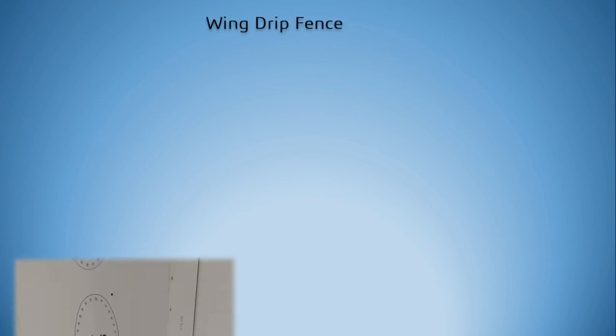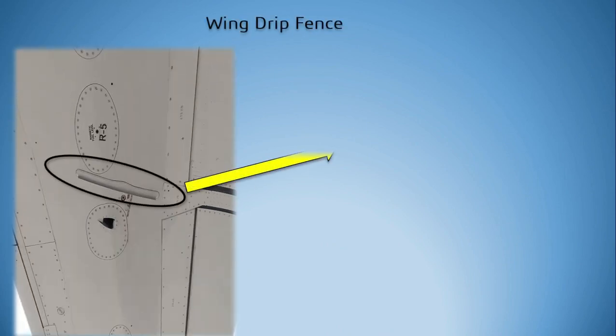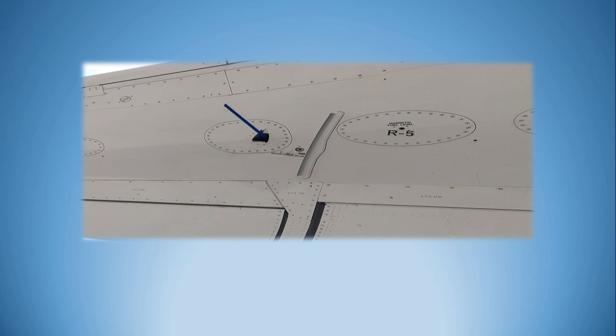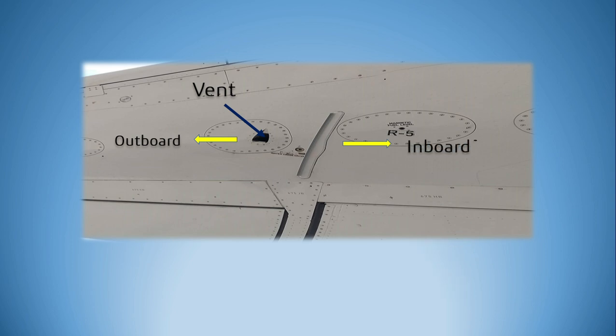The metal strip on the wing lower surface is known as wing fins or drip fins. Aircraft wing tanks have vents located on the lower surface of the wing. These vents allow air to escape from the fuel tank when the aircraft is refueled, and allow air inside the fuel tank when the aircraft is defueled or fuel is used by the engine. Wing tank vents equalize the pressure between the tank and the atmosphere.